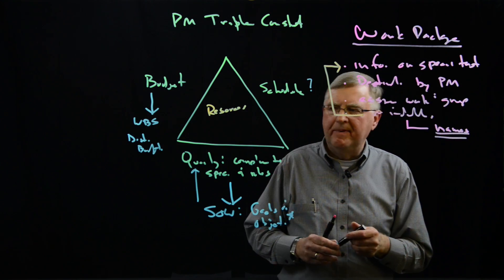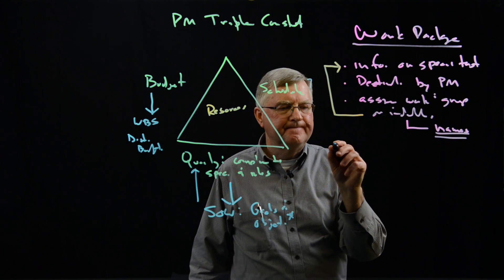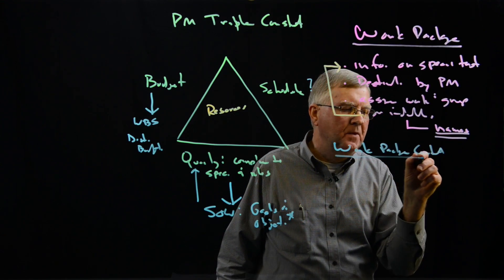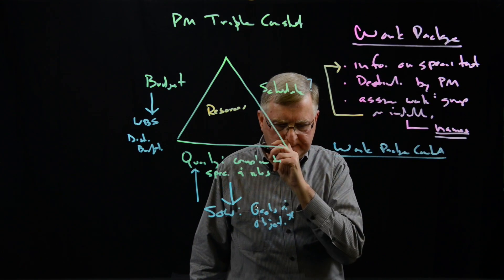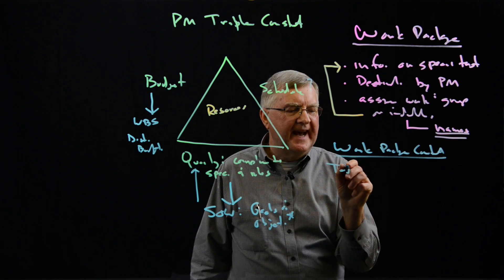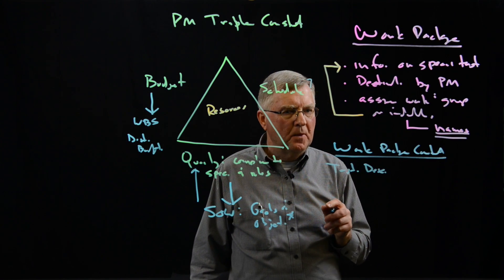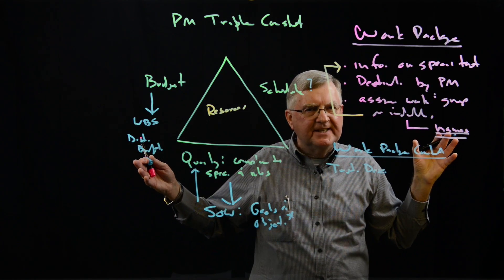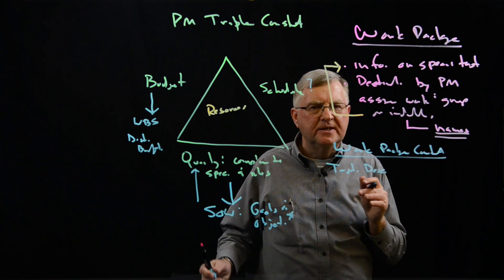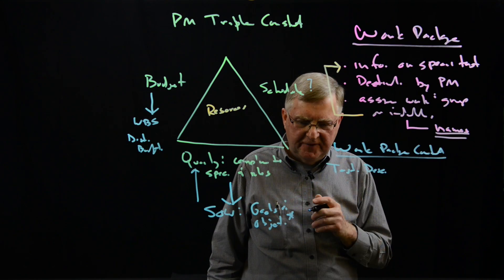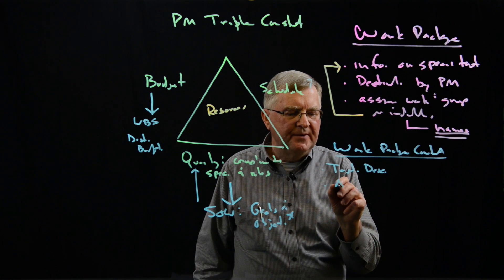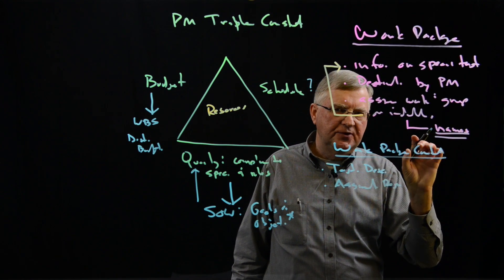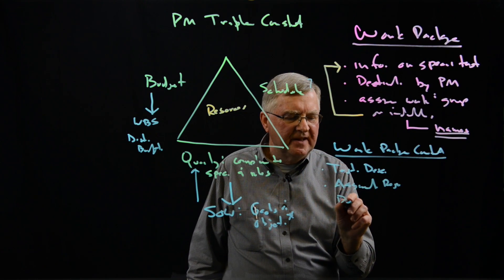Now, work package content. Within the work package, we look for a task description. What needs to be done? Very briefly, because these are not elaborate, extensive documents. Typical work package is less than one page, preferably a half a page. We also have assigned responsibilities that are listed in each individual work package. And then we have deliverables. Deliverables are outputs that support other tasks.